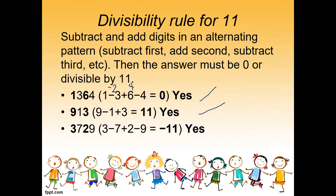Next: 3729. 3 minus 7 — since 7 is bigger, this gives negative 4. Negative 4 plus 2: since they have different signs, we subtract: 4 minus 2 equals 2, and the sign follows the larger, so negative 2. Then negative 2 minus 9: same sign so we add, giving negative 11. Negative 11 is divisible by 11, so 3729 is divisible by 11 and 11 is one of its factors.